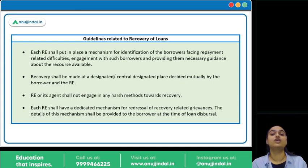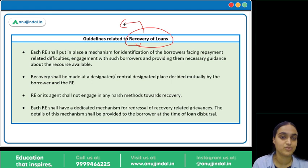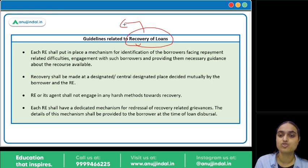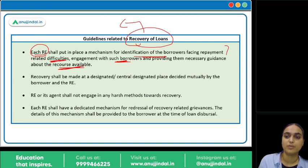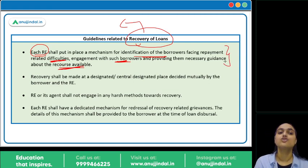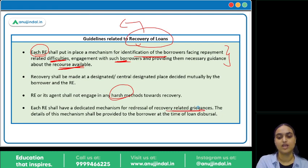Guidelines also cover recovery of loans. Harsh methods are strictly prohibited — lenders cannot threaten borrowers or their family members to recover loans. Recovery must happen at a proper time and place. Each regulated entity must have a mechanism to identify borrowers facing repayment difficulties, engage with them, and provide guidance on available recourse. A grievance redressal mechanism must also be in place.